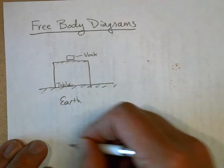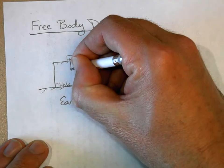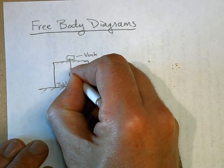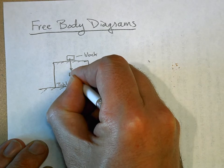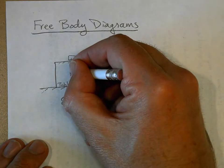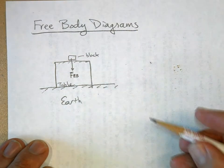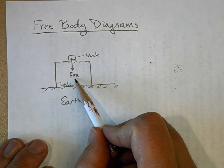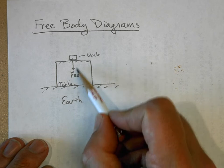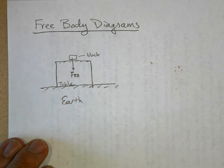Obviously, the earth is pulling down on the block. So I'm going to show it like this — this is the force of the earth on the block. We use a capital F to stand for force. The earth is the agent that's acting on the block, pulling down on it with the force of gravity. This is the agent, and this is the object that's getting pulled on.